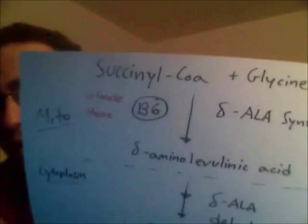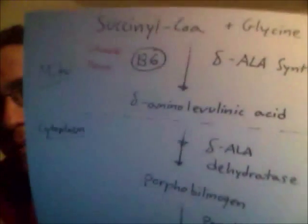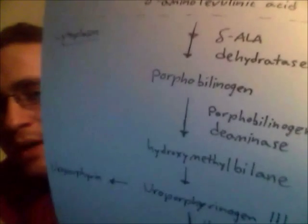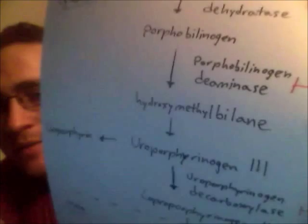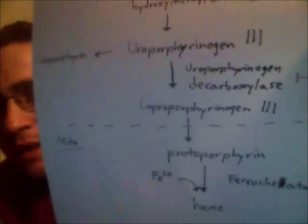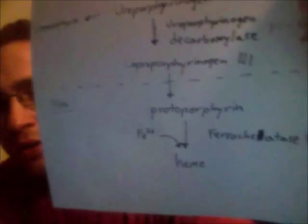Quick run-through again: succinyl-CoA grabs glycine and decides he's leaving home. It's important to note that B6 is there, by the way. He leaves the mitochondria, goes to the cytoplasm — enters college — kind of a wet blanket, dehydratase takes the water out of him and makes him a little more lively. He's now porphobilinogen. Then it's time to graduate and enter the workforce — they're deaminating him, taking the life out of him. He becomes Uroporphyrinogen III — you can even say that in a British accent. Then he advances up the corporate ladder, becomes decarboxylated into Coproporphyrinogen III — the co-pro head corporate guy. But he decides that's not what he wants in life. He heads back to the mitochondria, sheds his title, and finds usefulness as an iron chelator, becoming heme.